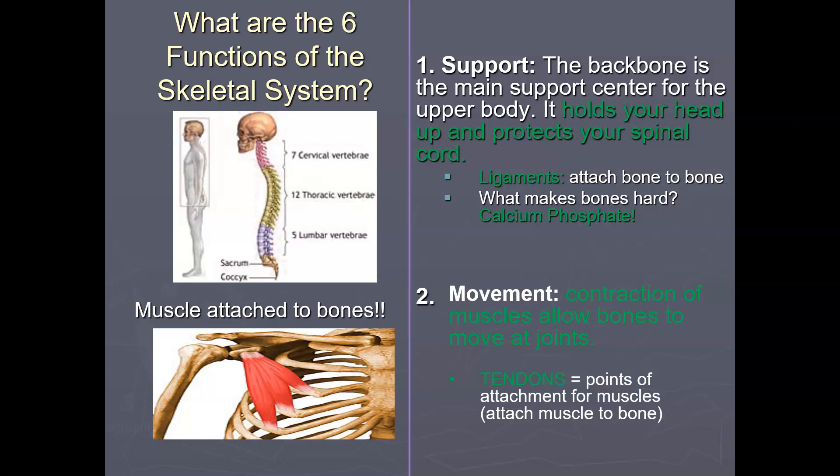The second function of bone is movement. Movement involves contraction of muscles to allow bones to move at joints. Tendons are points of attachment for the muscles — tendons attach muscle to bone.